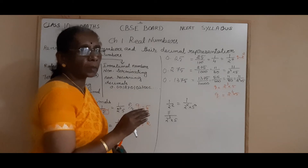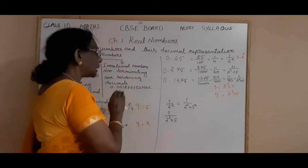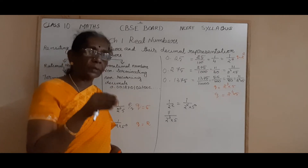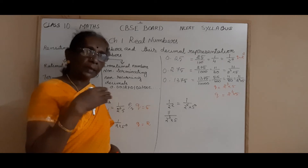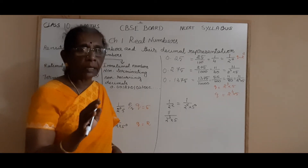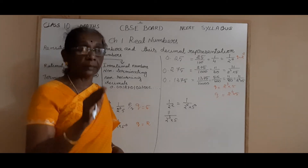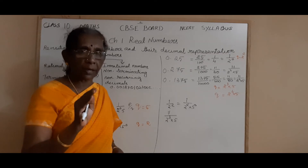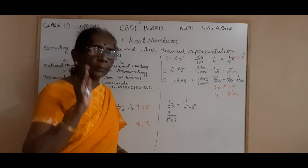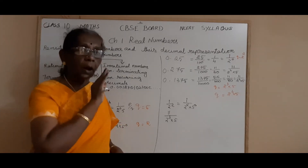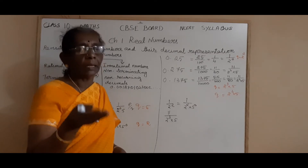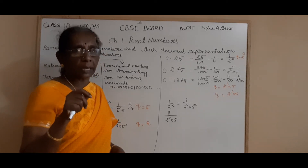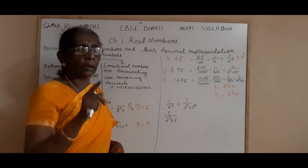So what is the condition for the decimal representation of a rational number — to find whether the decimal representation of the given rational number is terminating or non-terminating? The condition is: the denominator Q should be in the form of 2 to the power M into 5 to the power N. And 2 and 5 should be the only prime factors. The powers may be anything. If there is any other prime number in the denominator, then it represents a non-terminating repeating decimal.